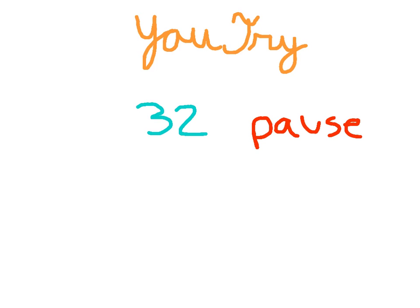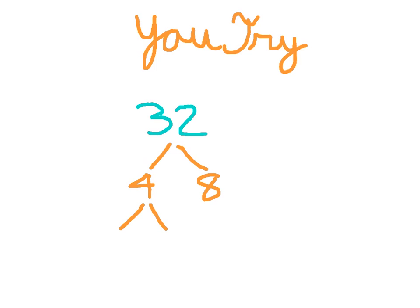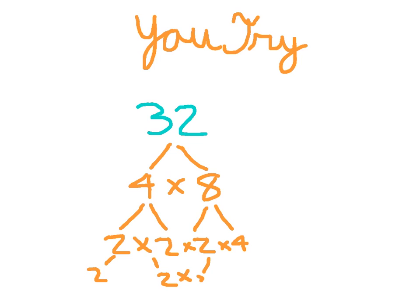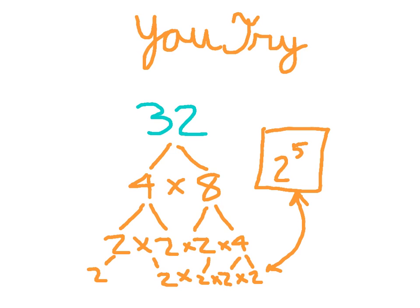It's time for you to try. Please draw a factor tree for the number 32 and then hit pause. Here is a possible factor tree for 32. You'll still have those same factors at the lowest level of your factor tree, as long as you figured out your factor tree correctly. 4 breaks down into 2 times 2, and 8 breaks down into 2 times 4. So 2 times 2 times 2 times 2 times 2 is our prime factorization of 32, or 2 to the 5th power.